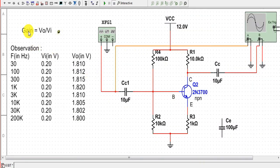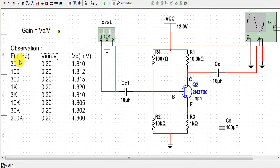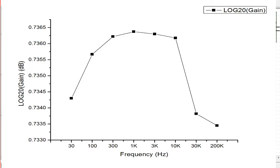We find the AC gain by dividing the output voltage by the input voltage, then take the log of the gain value and plot it against frequency. We can now see the frequency response graph in the figure.